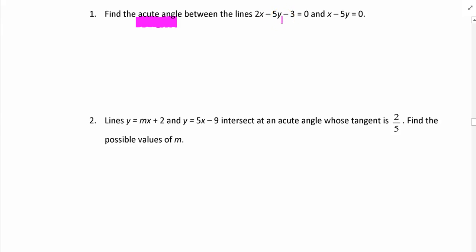When you look at this, hopefully you recognize these as straight lines. This 2x - 5y - 3 is just writing the straight line in the format ax + by + c = 0, and the same here. We really need to rearrange these equations before we can get their gradients.